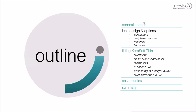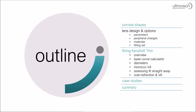Here's the outline of what we're doing. We're going to first do a quick look at corneal shapes, because it's really important to know what you're fitting and to think of this in three dimensions. Then we'll look at the lens design, options, and fitting set. We'll move on to fitting fairly quickly, then take a short break, followed by case studies covering easy fittings, more complex fittings based on topography, and cases without topography.